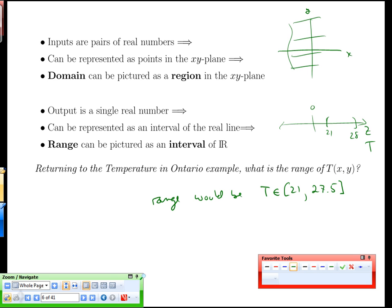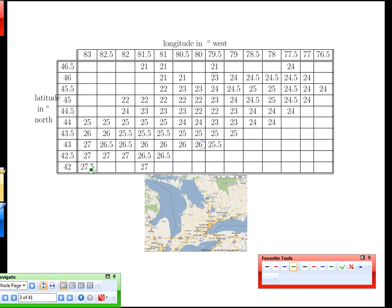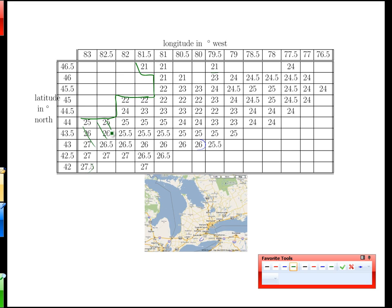The domain is an interesting thing to look at as well. In this particular graph, this region here is in the domain because there's a temperature defined on those points, whereas this region here, all those points would not be in the domain. We don't have temperature readings over water in this particular case, so we don't have an output for those inputs.